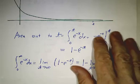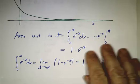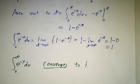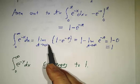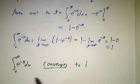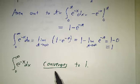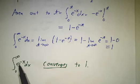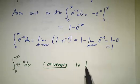Our terminology: if the limit exists, we say the integral converges, and whatever the limit equals is what it converges to. So the integral from 0 to infinity of e to the minus x dx is 1, and we say it converges to 1.